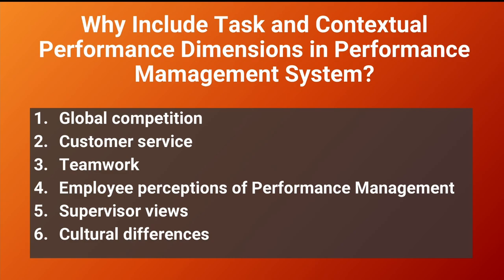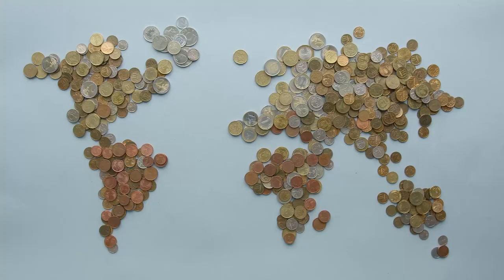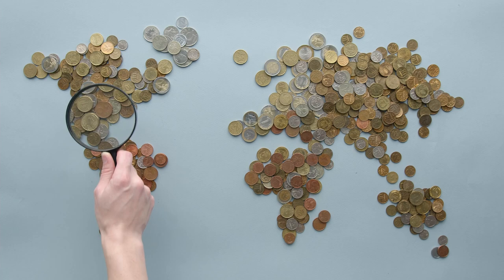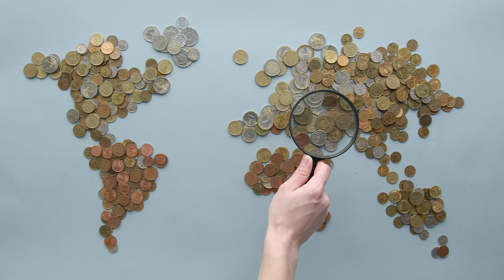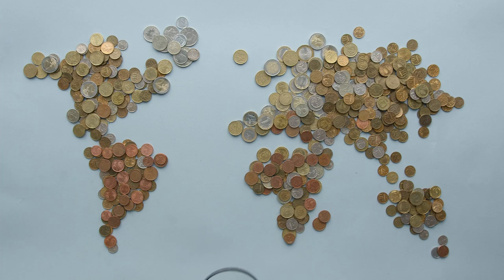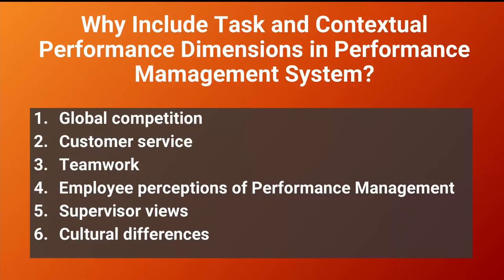Why include both task and contextual performance dimensions in performance management systems? There are numerous reasons. First, global competition is raising the levels of effort required of organizations and their employees. It may have been sufficient in the past to have a workforce competent in task performance, but today's globalized, fast-moving era makes it imperative that the workforce also engage in positive contextual performance.